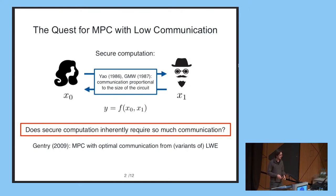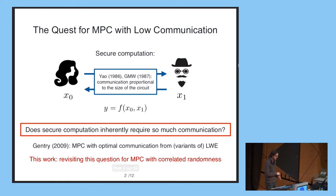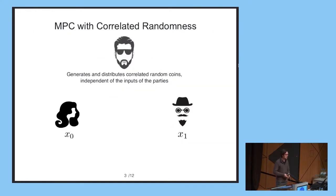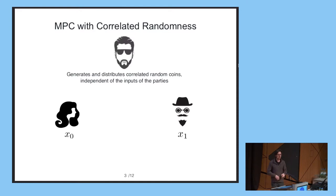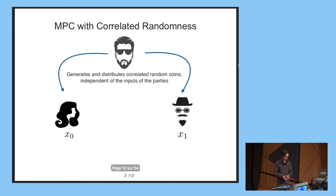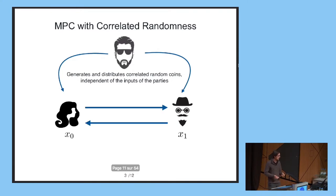In this talk, I'm going to revisit this question in the context of secure computation in the correlated randomness model. In this model, you have a trusted dealer that, before the start of the protocol, will generate and distribute correlated random coins that are independent of the inputs to the protocol and give them to the parties. Then the parties can use these correlated random coins in the actual secure computation protocol.